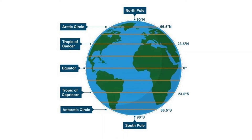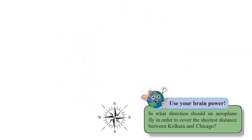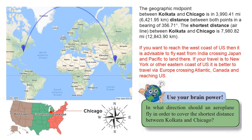Activity: In which direction should an aeroplane fly to cover the shortest distance between Kolkata and Chicago? If you want to reach the west coast of the US, it is advisable to fly east from India, crossing Japan and the Pacific. If travelling to New York or the eastern coast, it is better to travel via Europe, crossing the Atlantic, Canada, and reaching the US. To reach Chicago, fly west.